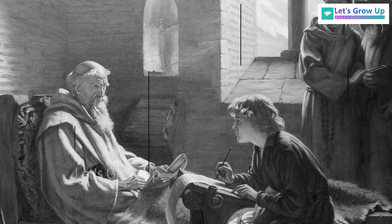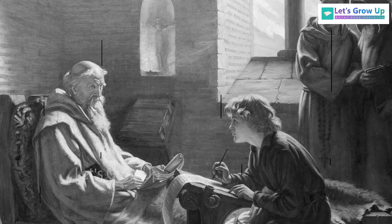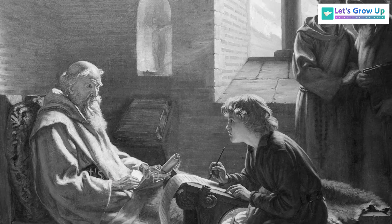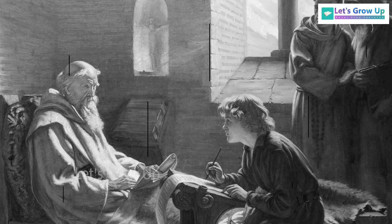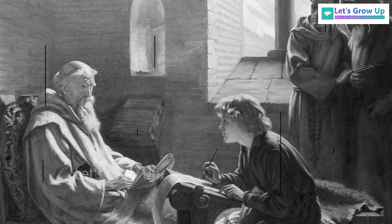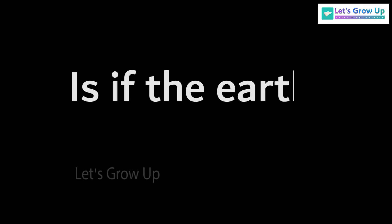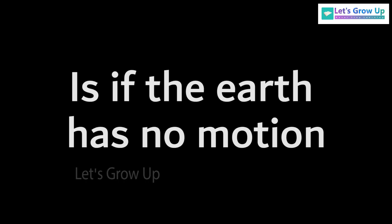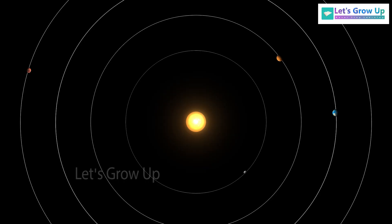But there was only one clue that changed the idea of scientists: if the earth has no motion, then how do the seasons change on the earth? This idea changed the perception of our solar system.